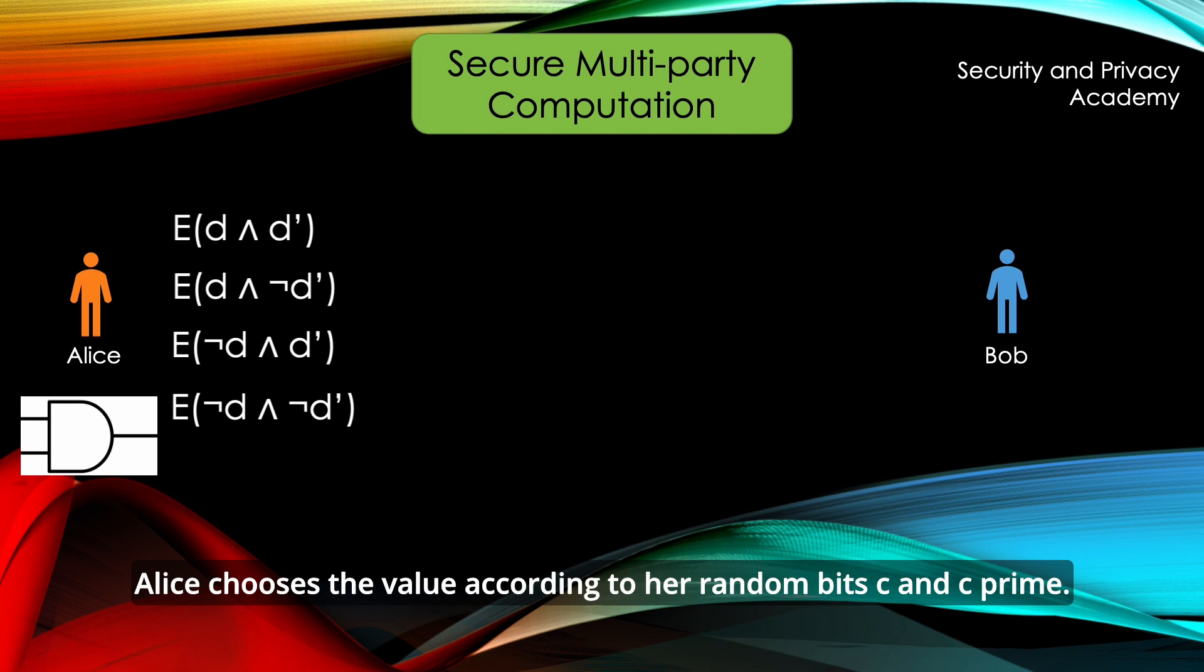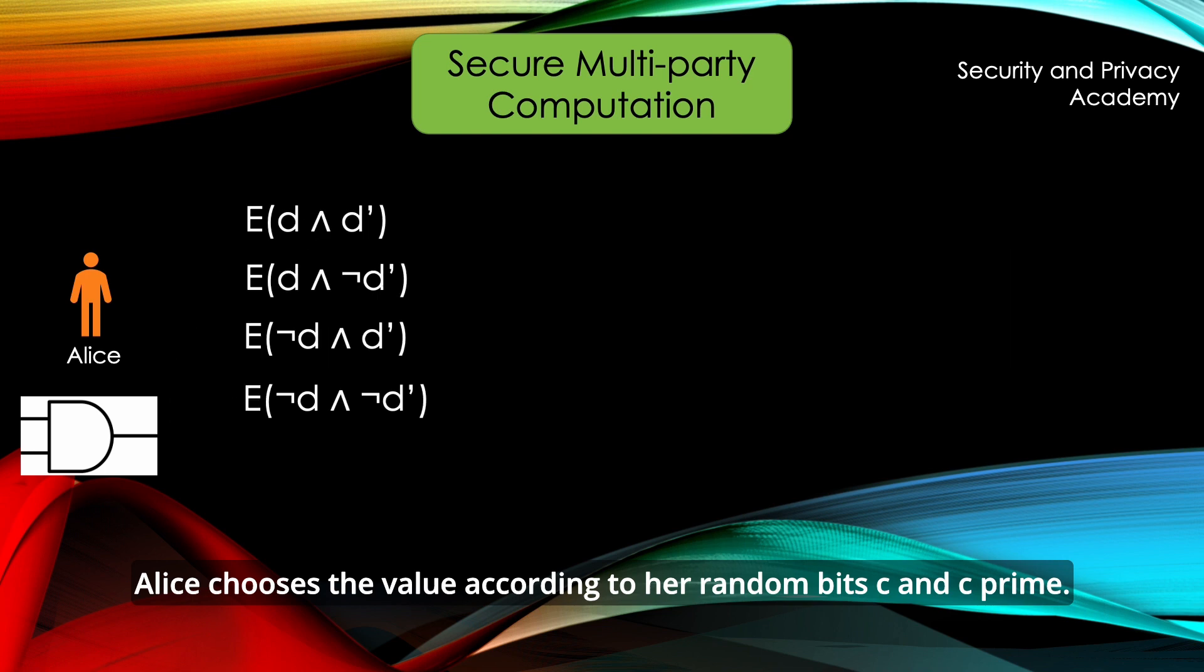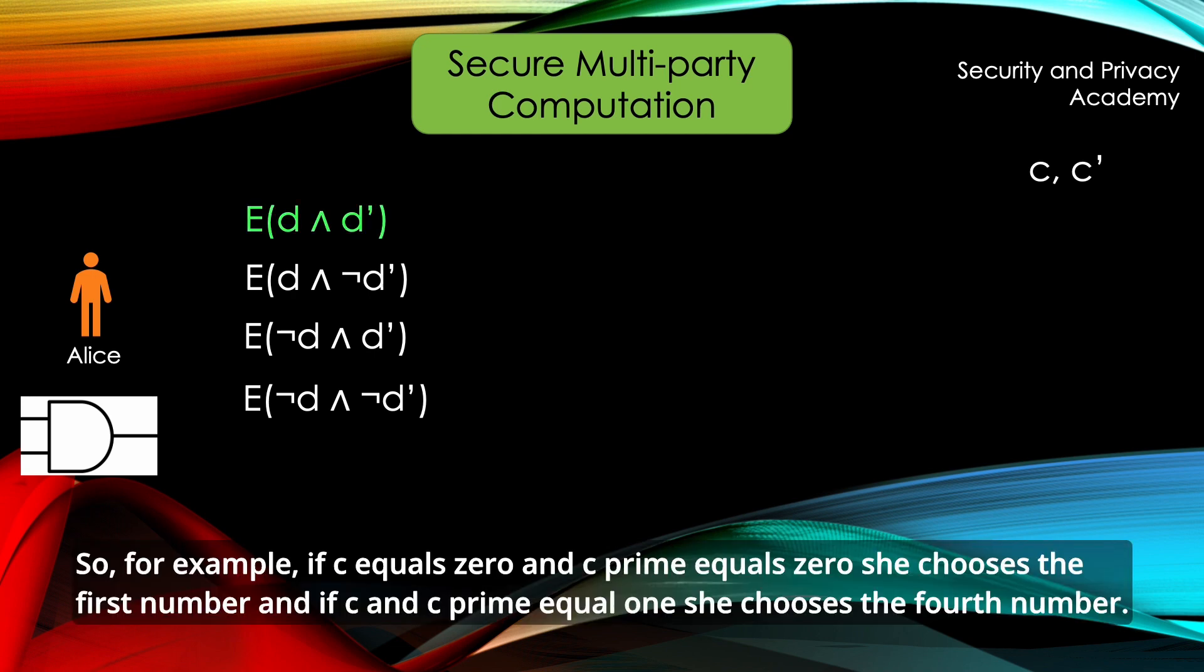Alice chooses a value according to her random bits C and C'. For example, if C equals 0 and C' equals 0, she chooses the first number and if C and C' equal 1, she chooses the fourth number.